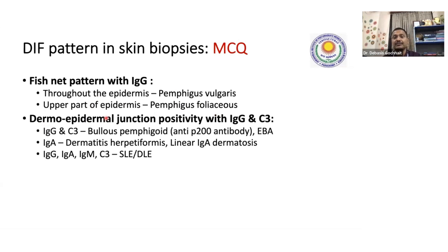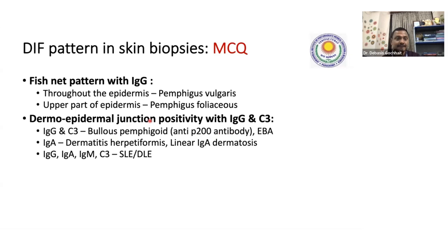Dermoepidermal junction positivity can be seen in many conditions requiring clinical and histopathological correlation. But if you have C3 and IgG positive at the dermoepidermal junction, think bullous pemphigoid as well as epidermolysis bullosa acquisita. A new antibody called BP200 is also available — if this is positive, you can say the patient has bullous pemphigoid. If you have IgA at the junction, that becomes dermatitis herpetiformis. So same junction: IgG and C3 = bullous pemphigoid; IgA = dermatitis herpetiformis.